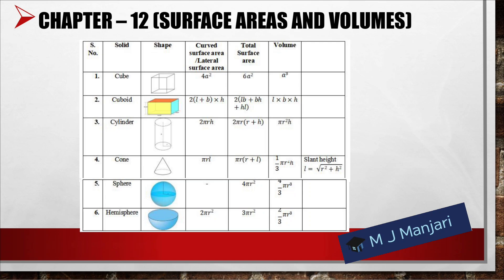Next we have Chapter number 12: Surface Area and Volume. In the given table you can see different shapes, their curved/lateral surface area, total surface area, and volume formulas. For a cube: curved surface area = 4a², total surface area = 6a², volume = a³. For a cuboid: curved surface area = 2(l+b)h, total surface area = 2(lb+bh+hl), volume = l×b×h.